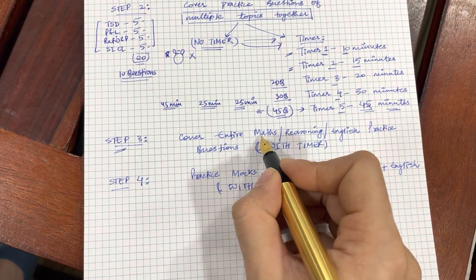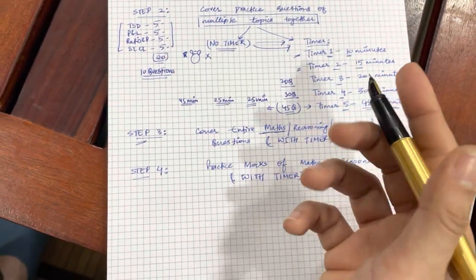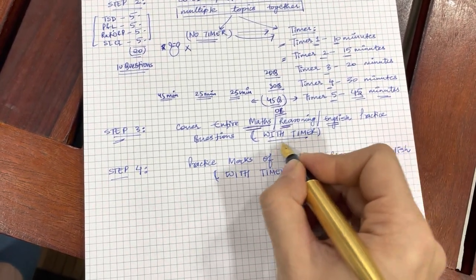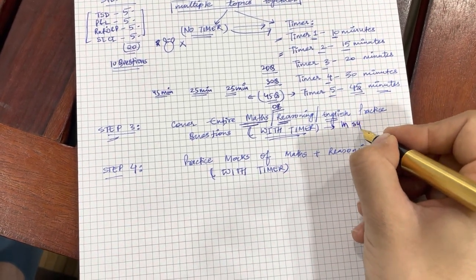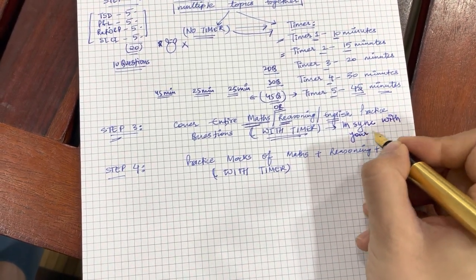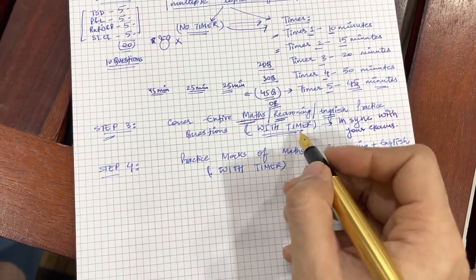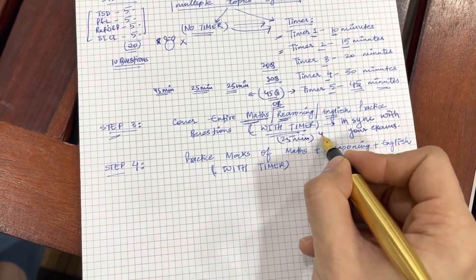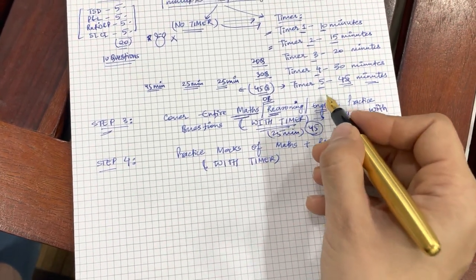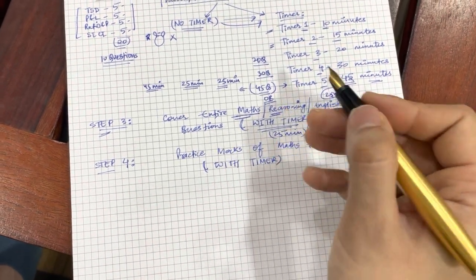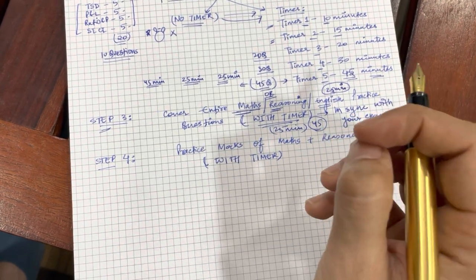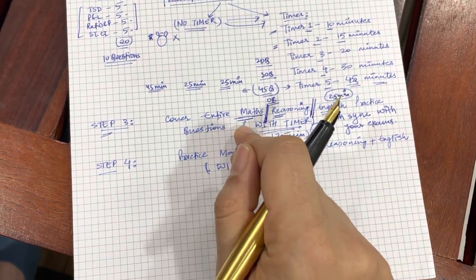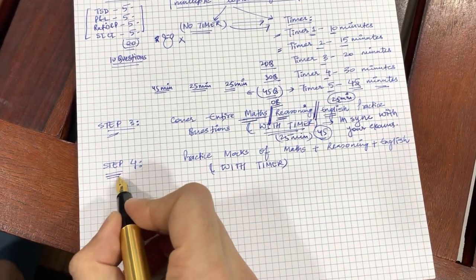Let us come to step 3 now. In step 3, you are going to cover entire maths, not only these 4 topics or 5 topics or 10 topics, entire maths or entire reasoning or entire English practice questions with a timer. This timer is going to be in sync with your examination. Let us say you are again preparing for RBI grade B. What is going to happen? You put a 25 minute timer for quant, you take up 30 questions and you practice them. Similarly, you put a 45 minute timer for reasoning, you take up 60 questions and you practice them. You put a 25 minute timer for English, you take up 30 questions and you practice them. This will enable you to experience how you are to feel in the final examination, but here again because it is step 3 and not the final step, you are taking only one subject at a time. Once you have mastered this, once you feel more comfortable with it, then you jump on to step 4.